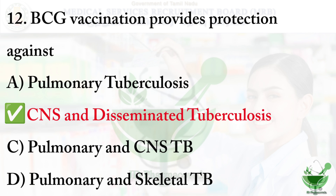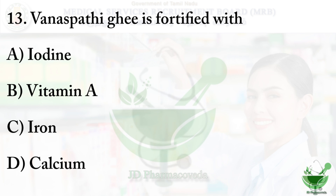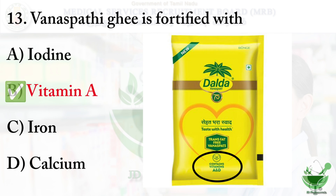Question number 13: Vanaspati ghee is fortified with which of the following? Options are: A) Iodine, B) Vitamin A, C) Iron, D) Calcium. The correct option is B — Vitamin A. Vanaspati ghee is made from vegetable oil and is fortified with vitamins A and D, so if Vitamin D is given as an option, that can also be selected.